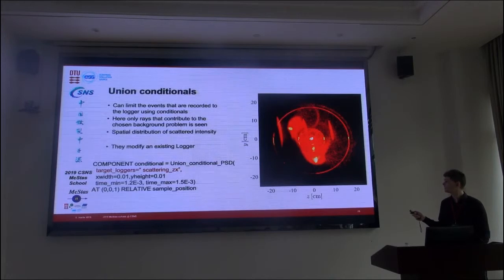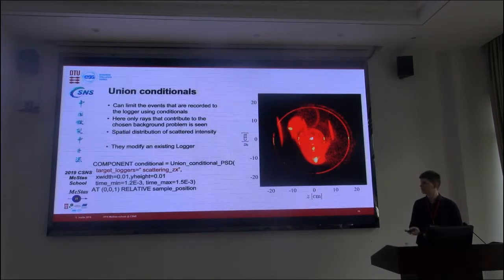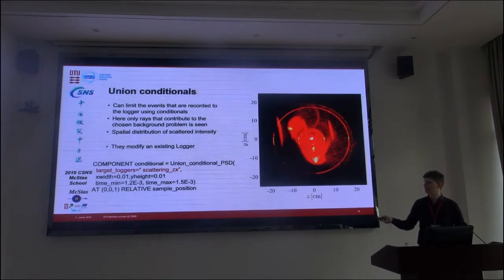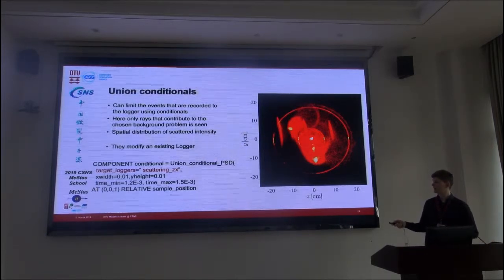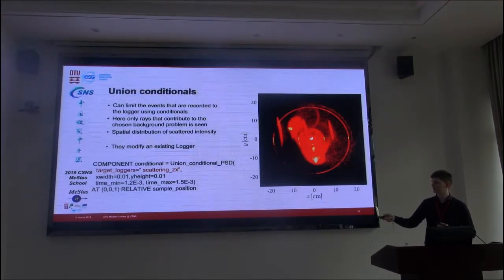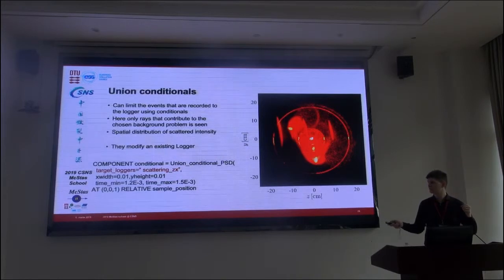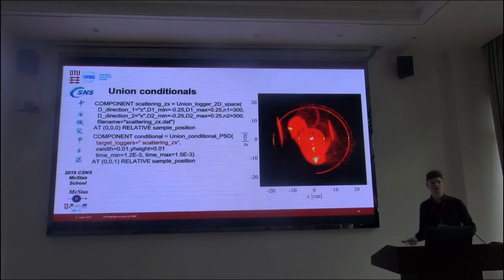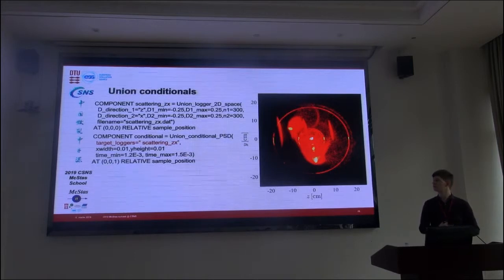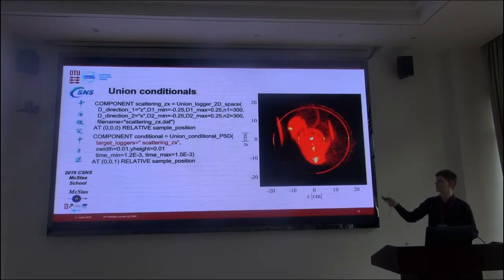So here is the syntax for adding such a conditional. And the important thing is this target logger line where you need to specify the name of the previous union logger. The rest is like a normal monitor. Here we set the width and height of the area that it has to hit in order to be included in the previous monitor. And also the time limits. And so you would set this one like a normal PSD. And let's just show it with the logger that it's modifying. So now this logger line here will not show all the data but just the subset that's important to you. And of course these need to be added before the union master in order for the union master to recognize that these exist.